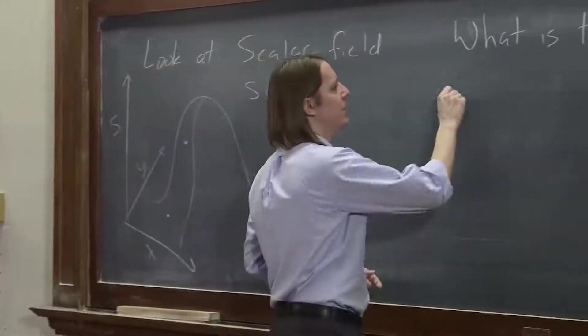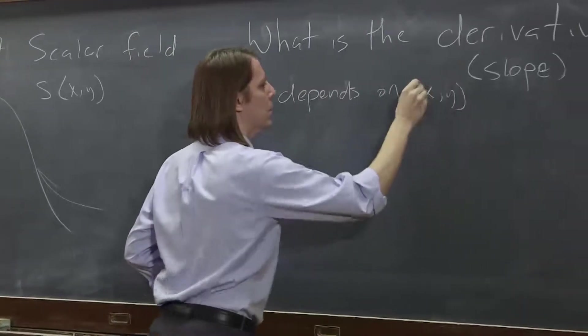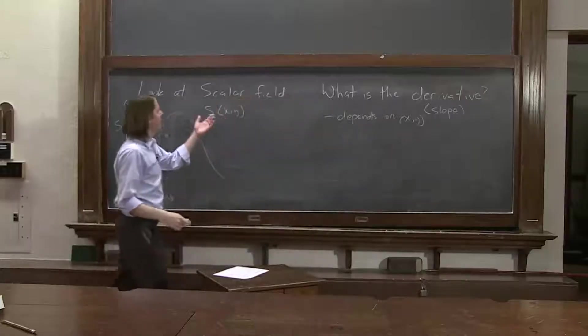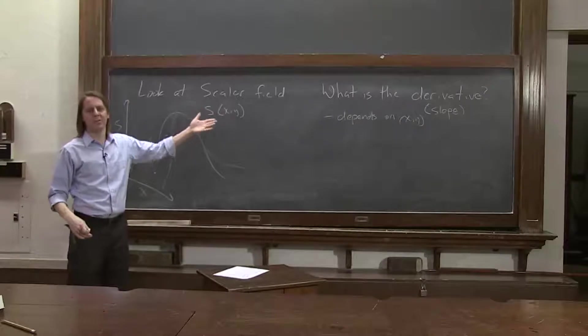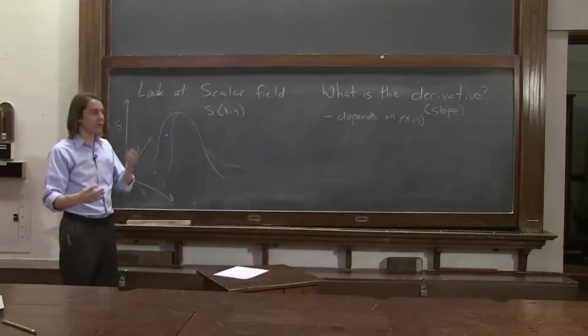So the derivative depends on position. We have to do something. But that's not too surprising, because we have a function, we have a scalar that depends on position. Its value depends on position. And even in a 1D derivative, it depends on where you are. That's not so bad.